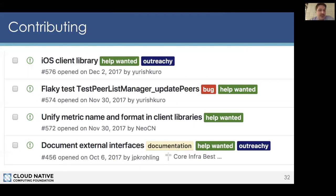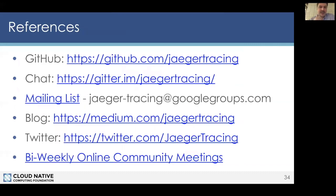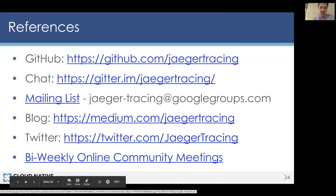If you're interested in contributing to Jaeger, we have plenty of issues open in various repositories tagged with 'help wanted', 'beginner task', or 'documentation'. We don't have any CLA — you just agree to a certificate of origin, which is the Linux approach. You just need to sign your commits with the dash-s flag, which puts your name and email address in the commit. If you have any more questions, you can come to the Gitter chat room at jaeger-tracing. We also have a blog on Medium with posts about Jaeger, and bi-weekly video calls every other Friday.